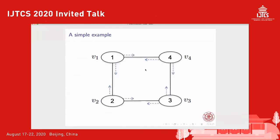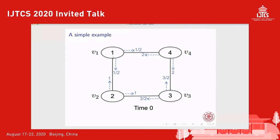Let me use an example to illustrate. There are four agents in the network, each agent having a weight representing his total resource to be allocated. At the beginning, each agent allocates his resource evenly to all his neighbors. We focus on the first agent V1: he has one unit of resource and allocates one half to each of his neighbors V2 and V4. On the other hand, he receives one unit of resource from V2 and two units from V4.